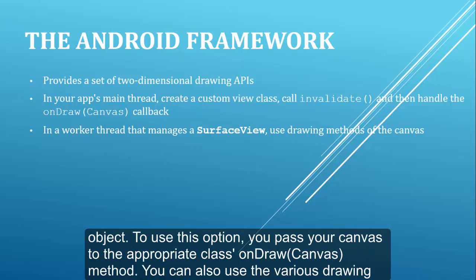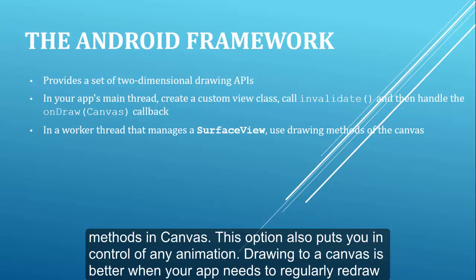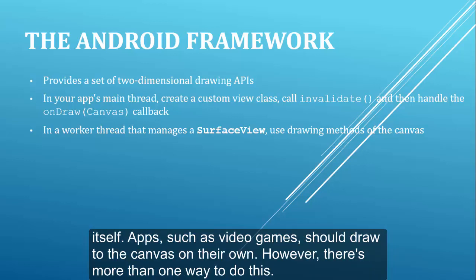To use this option you pass your canvas to the appropriate class's onDraw method. You can also use the various drawing methods in canvas. This option also puts you in control of any animation. Drawing to a canvas is better when your app needs to regularly redraw itself — apps such as video games should draw to the canvas.